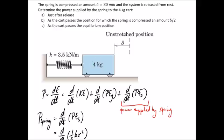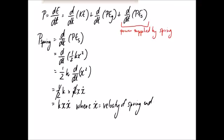The velocity that this spring end is going to be going at is going to be equal to the velocity of the box itself since they're attached. So I'm just going to call this v. So we can rewrite this equation as kxv. So we just need to calculate what that is at each of the three different scenarios.